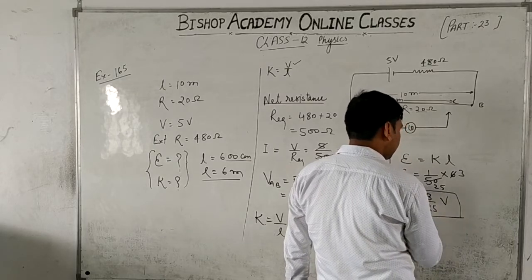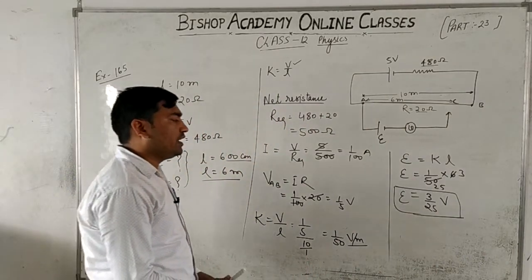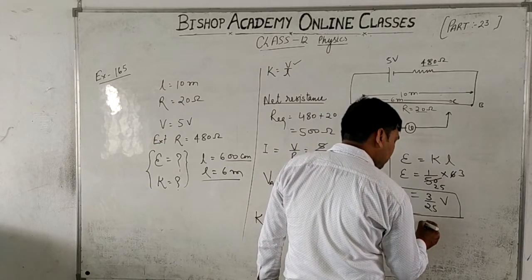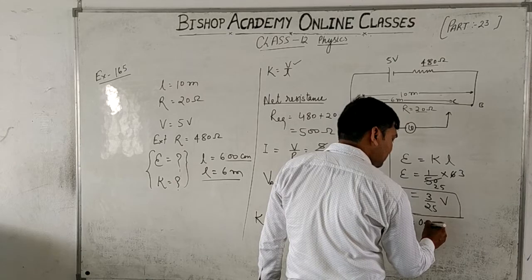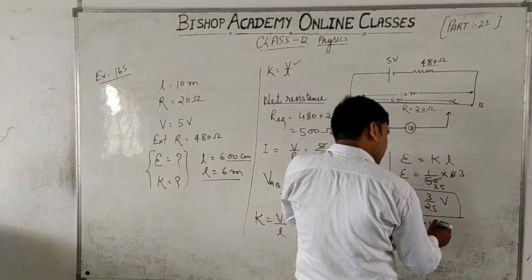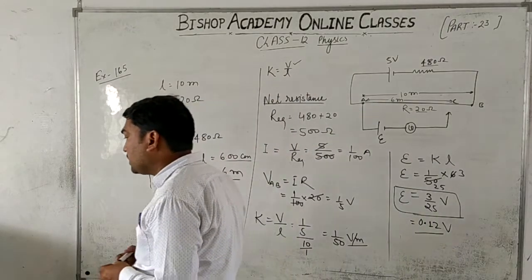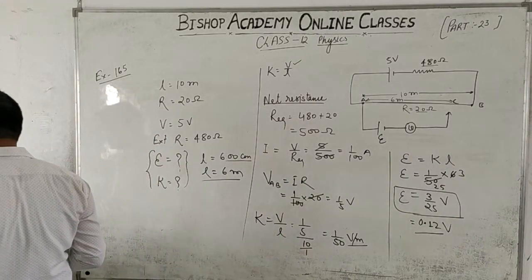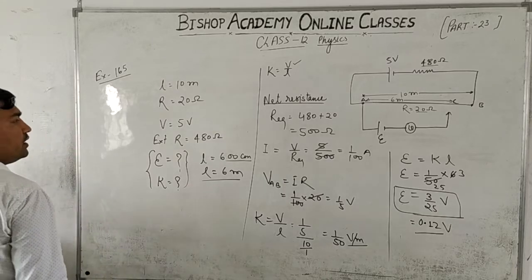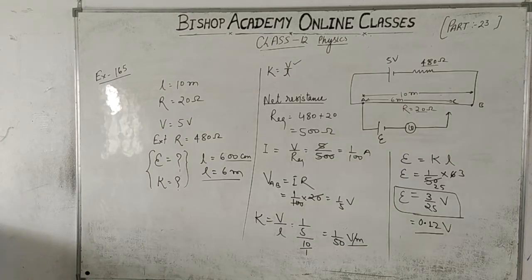Let's divide 3/25: 3 divided by 25 gives 0.12 volt. Let's verify — yes, 0.12 volt is correct. This is how we handle this type of question. Please note it down. Now let's move to the next question.